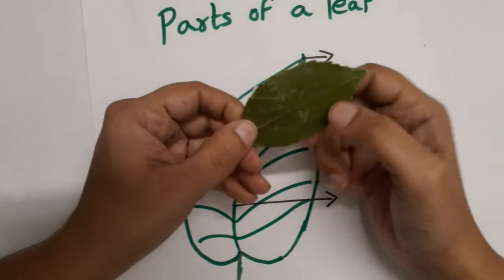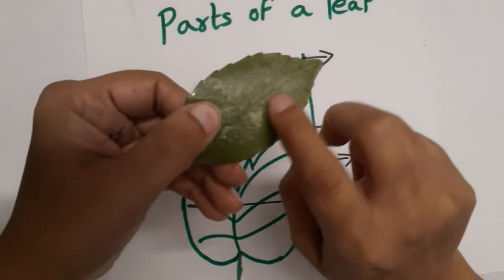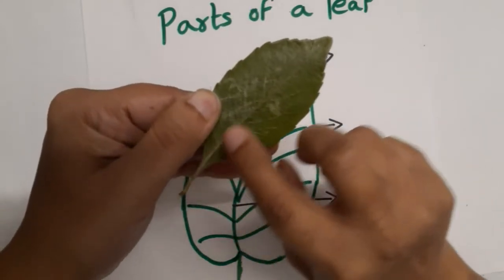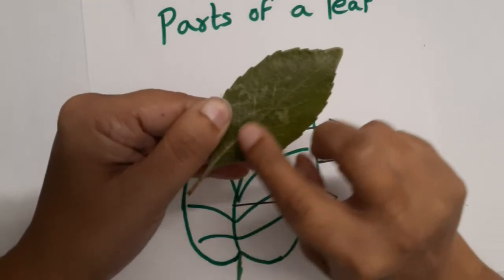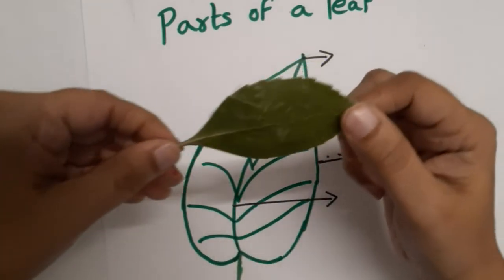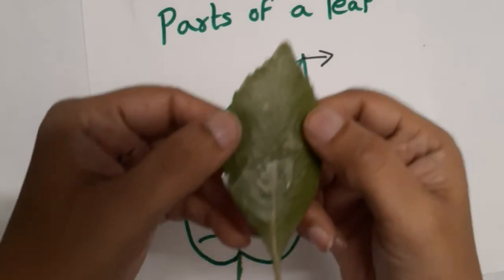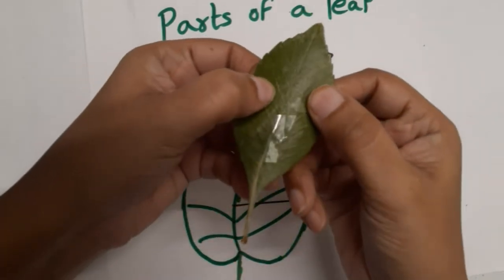And then you have these lines. The middle line is called the mid-rib. The mid-rib is the middle line that you can see here.